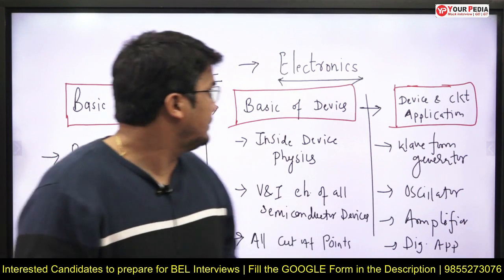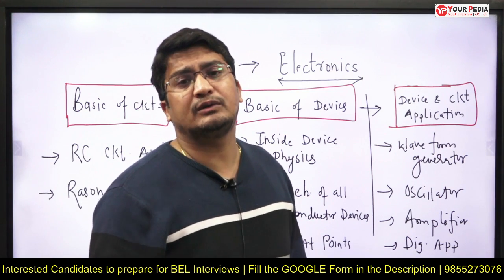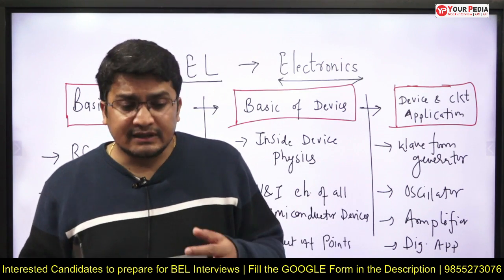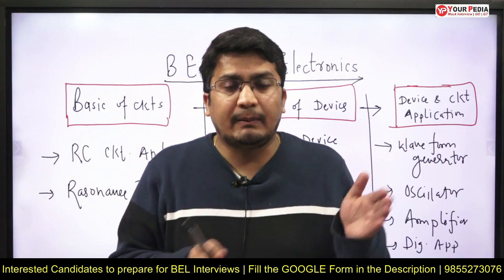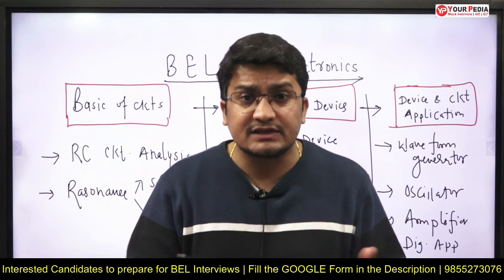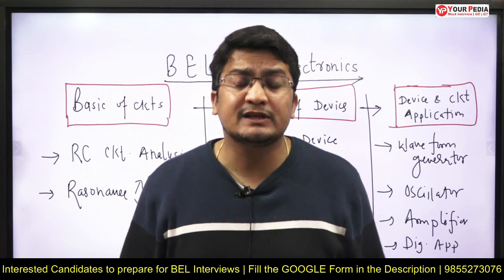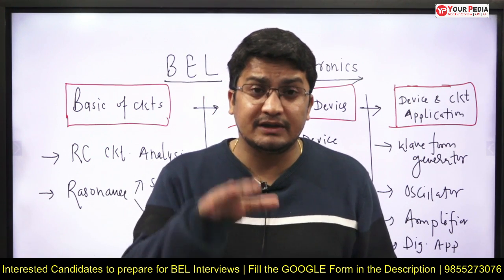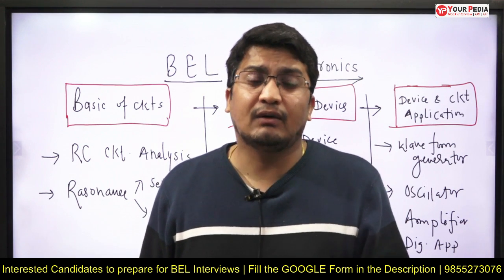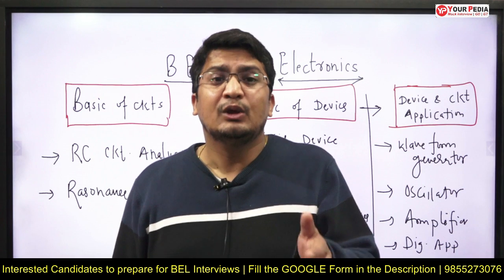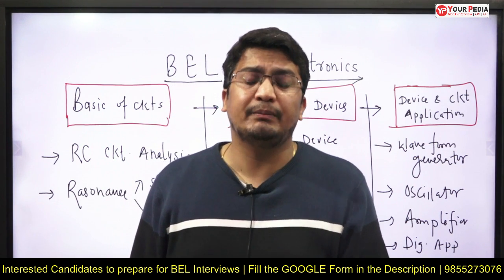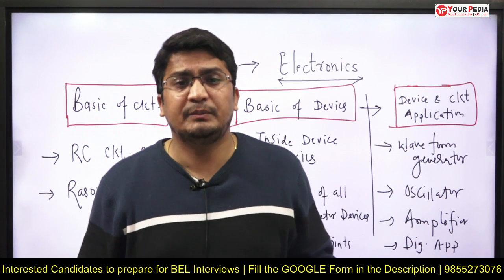Coming to the basics of device: we talk about junction formation — the PN junction — then two-junction formation, PNP, which is the BJT, then the MOSFET. How is the device behaving internally? If you have a P-type and N-type semiconductor with external biasing, how is the charge particle mechanism happening? How does the diode current equation result? What is the electrostatic physics behind it? Why is the electric field maximum at the junction? How to calculate space charge density? What is the significance of the depletion layer — is it physical or virtual? What is the difference between linear graded, abrupt, and tap graded junctions, and what applications do they find?